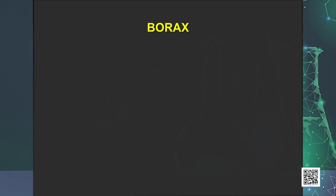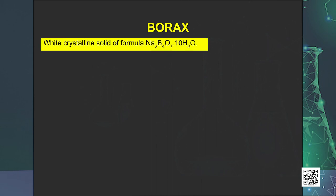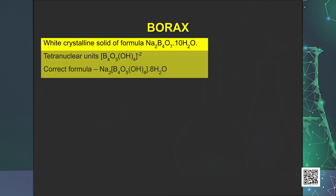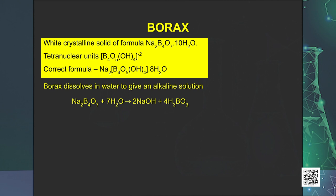Let us start the discussion with the chemistry of borax. Borax is the most important compound of boron. It is a white crystalline solid of formula Na₂B₄O₇ with 10 molecules of water of crystallization. As a matter of fact, it contains tetranuclear units of borate ions with formula as expressed on the screen. As you can see, borax dissolves in water to